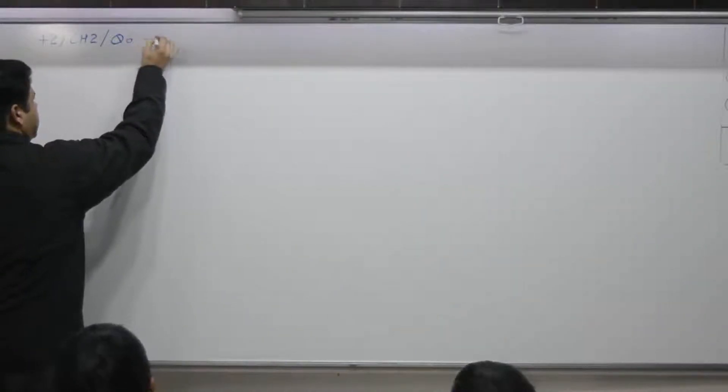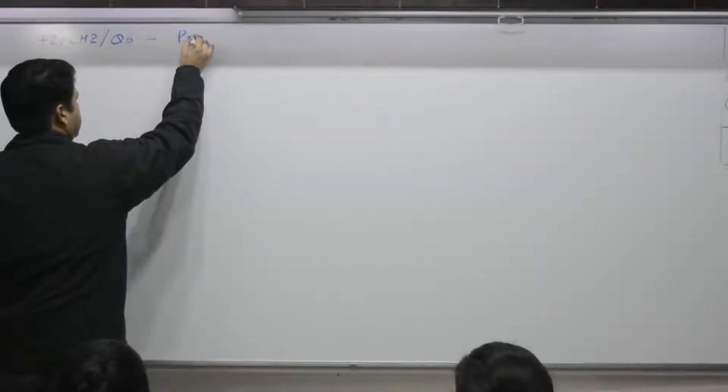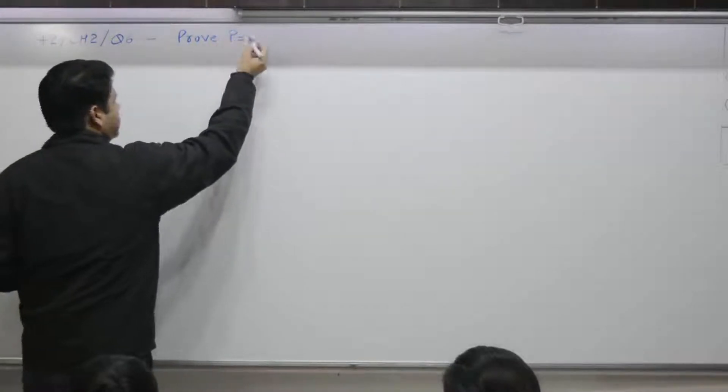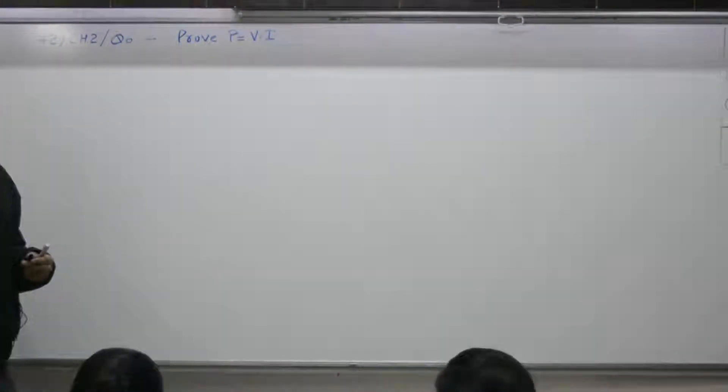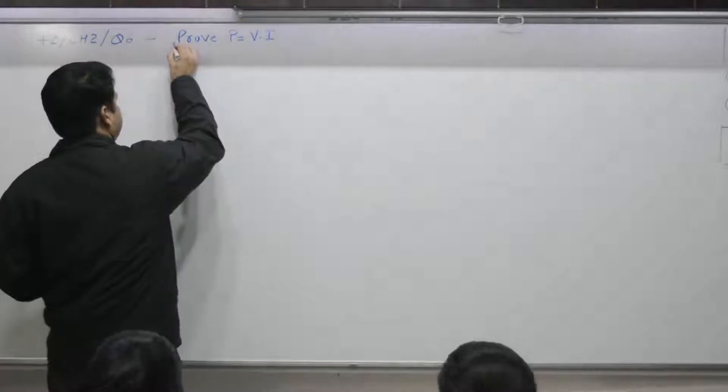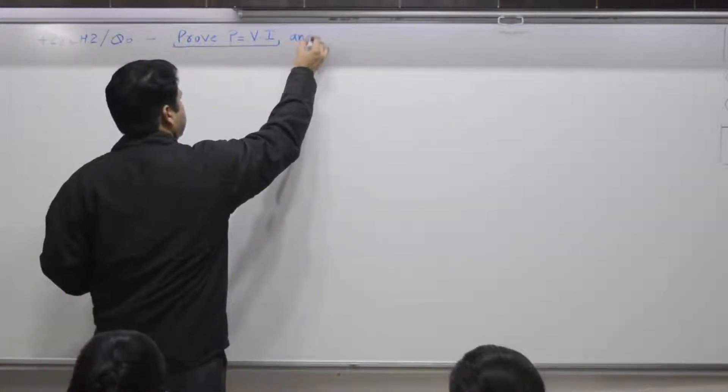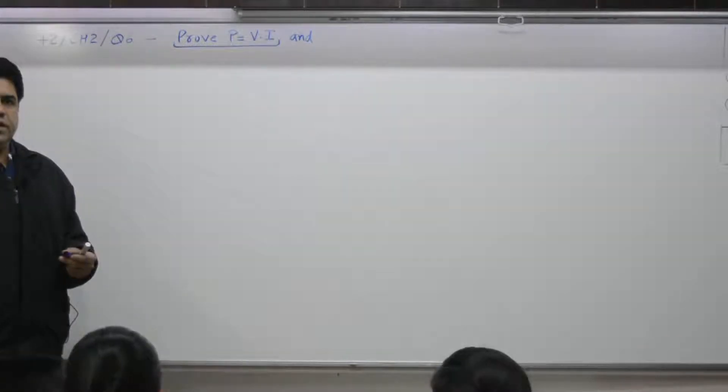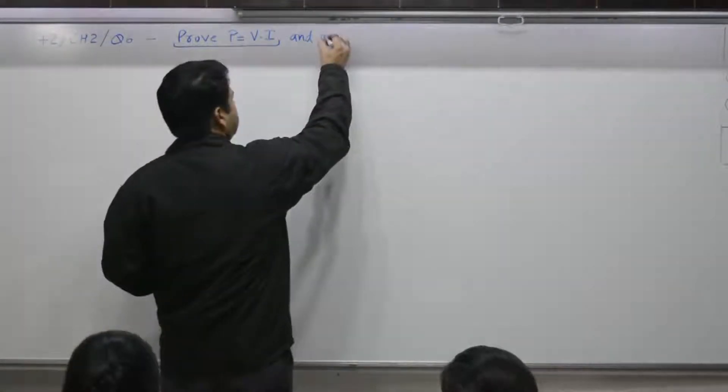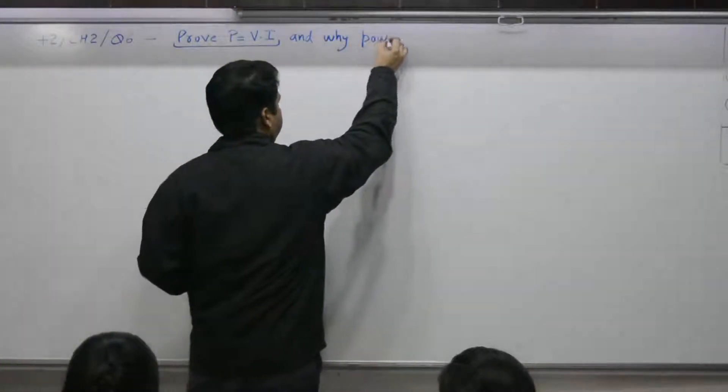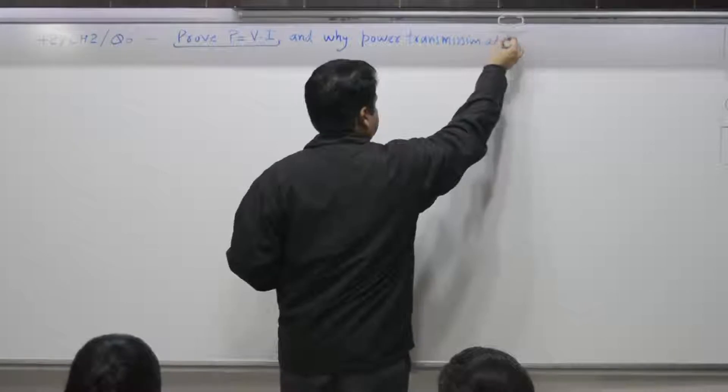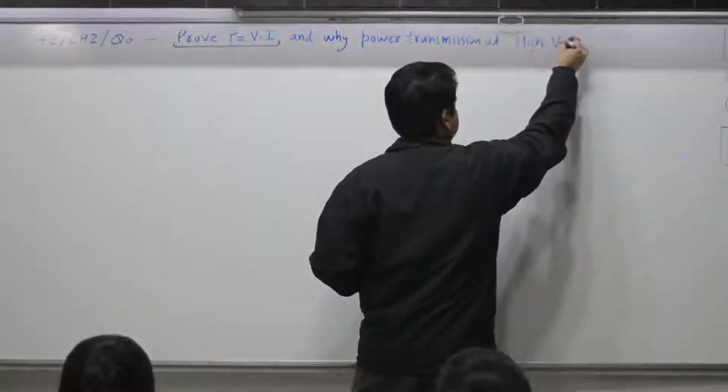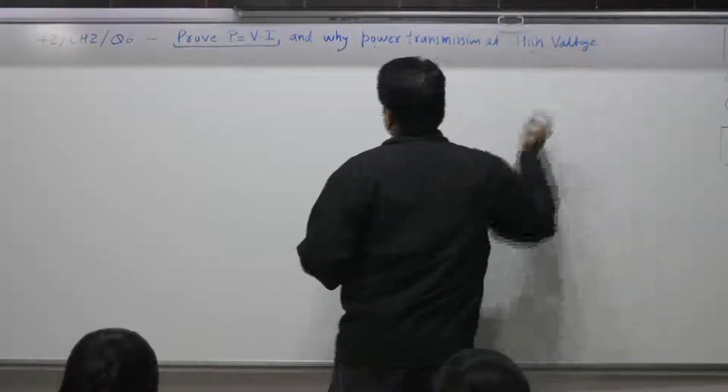Question number 6. Part A deals with prove power is equal to V into I or V square by R or I square R, something which you have already covered. This is one part and second part deals with why transmission of energy is at high voltage. Why power transmission at a high voltage? This is second part of the same A part.